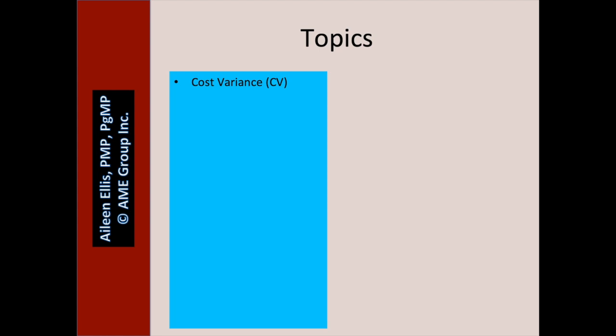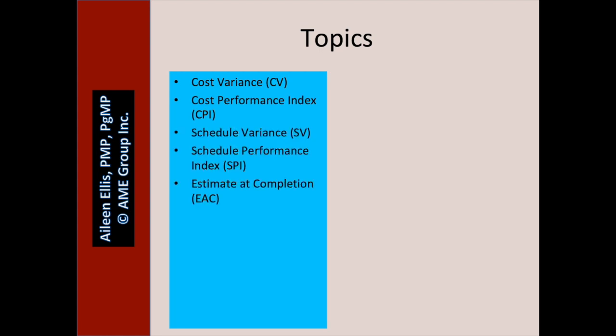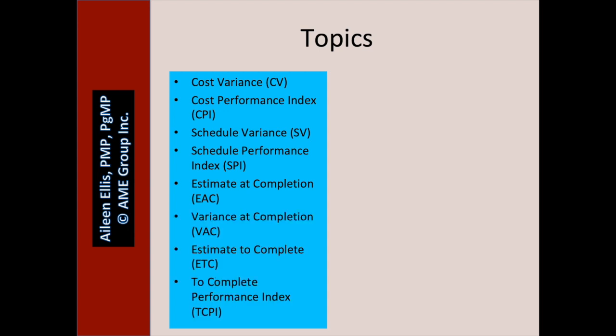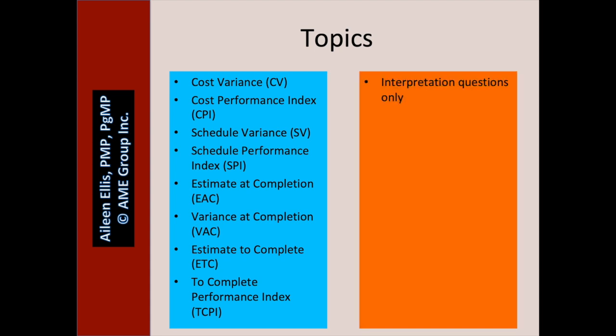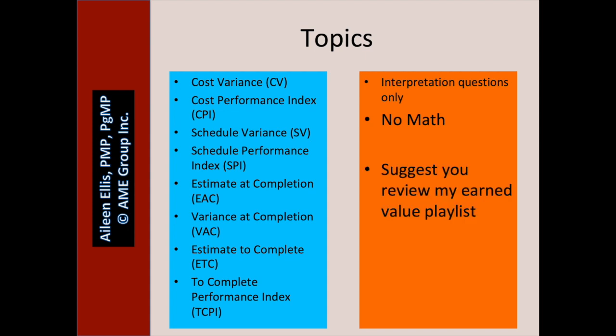These are the topics we're going to cover: cost variance, cost performance index, schedule variance, schedule performance index, estimate at completion, variance at completion, estimate to complete, and the to-complete performance index. As we review these topics, we're going to talk about interpretation questions only — no math. I suggest you review my other earned value videos in my earned value playlist if you want to see mathematical questions related to earned value.